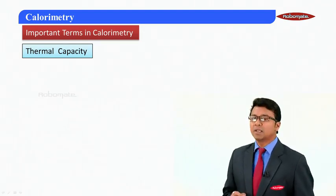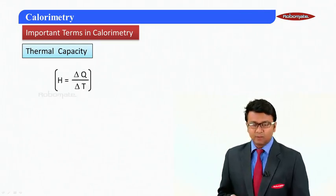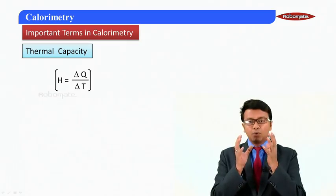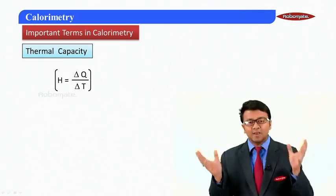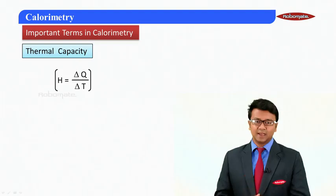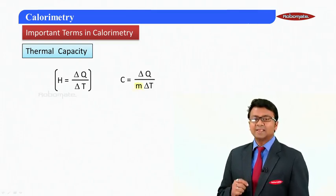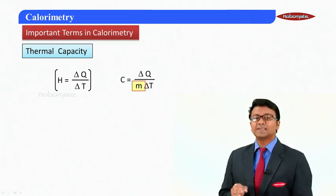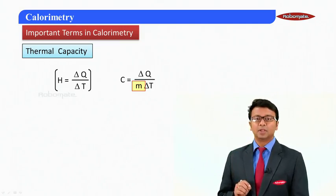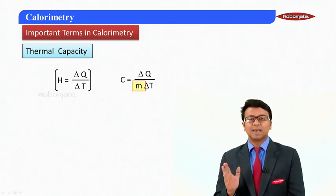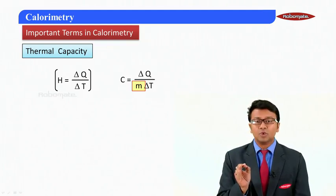The first term that I will be encountering is thermal capacity. Thermal capacity is defined as the amount of heat required in order to raise the temperature of the entire body by 1 degree centigrade, whereas specific heat capacity is the amount of heat required to raise the temperature of unit mass of a substance by 1 degree. So the difference between thermal capacity and specific heat capacity comes in the fact that it is for the entire body and this is for a unit mass.